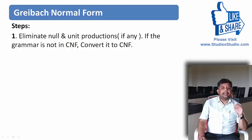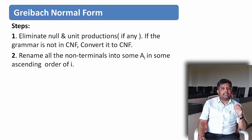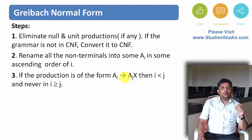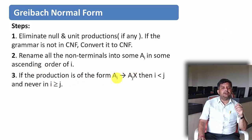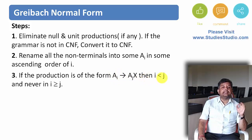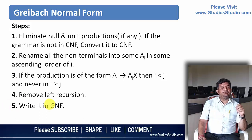The second step is to rename all the non-terminals as Ai in ascending order of i. We will understand this better while doing an example. The third step is: if a production is in the form Ai derives Aj X, where i and j are the subscripts of variable A, then i must be less than j — it should never be in a greater-than-or-equal-to relation. If any left recursion appears, we need to remove it and convert it into Greibach Normal Form.